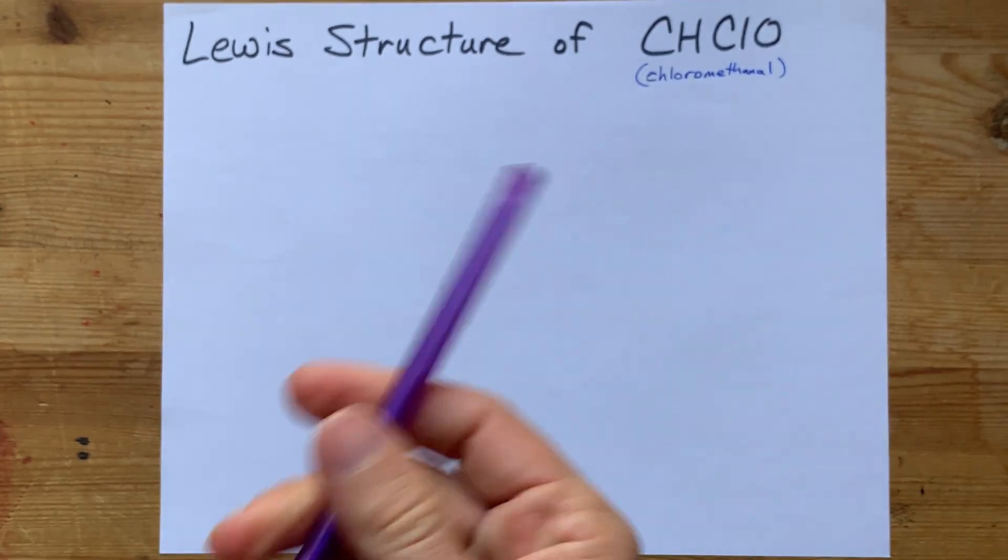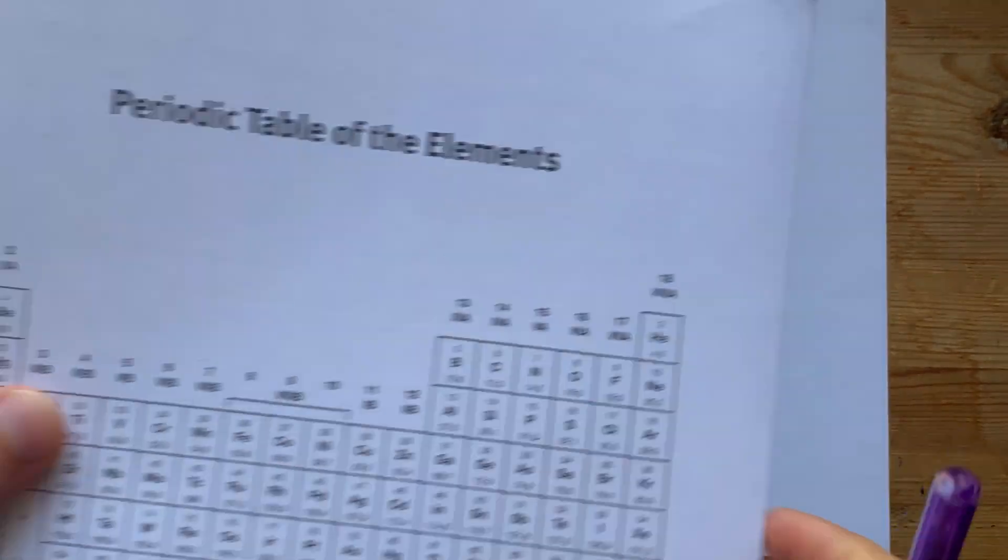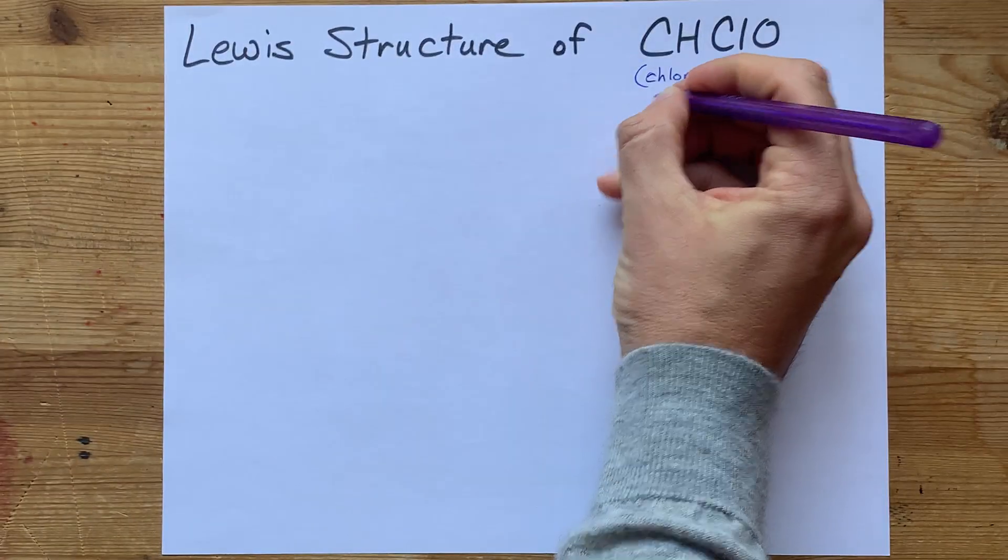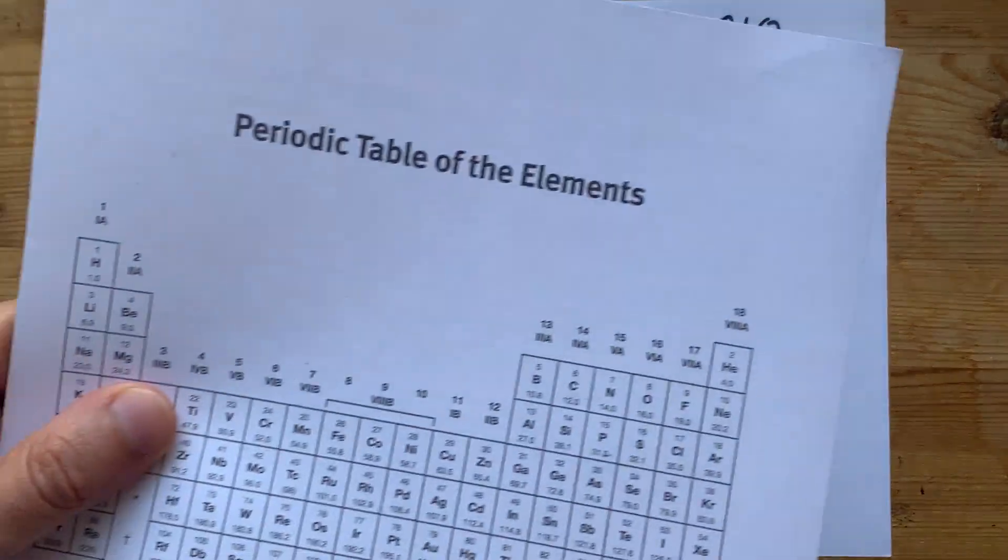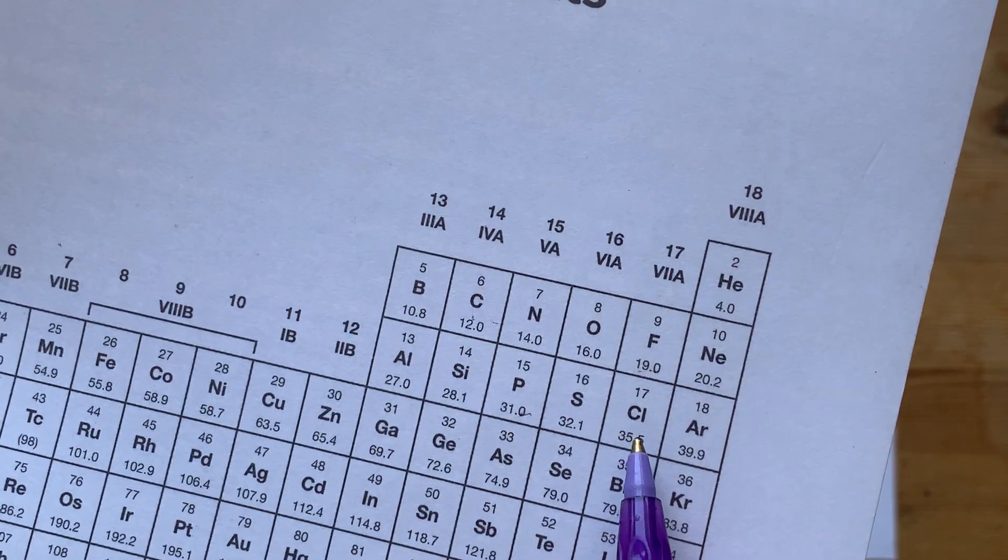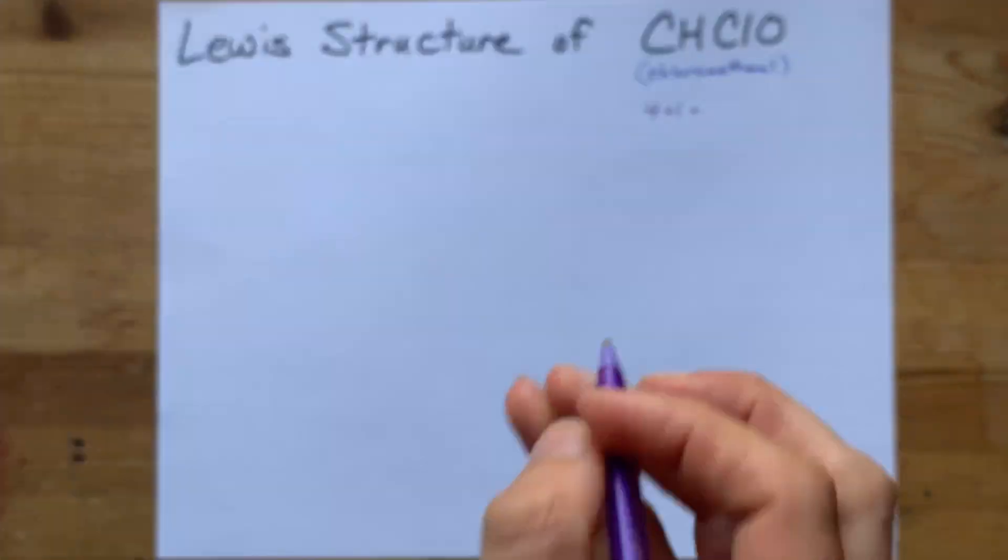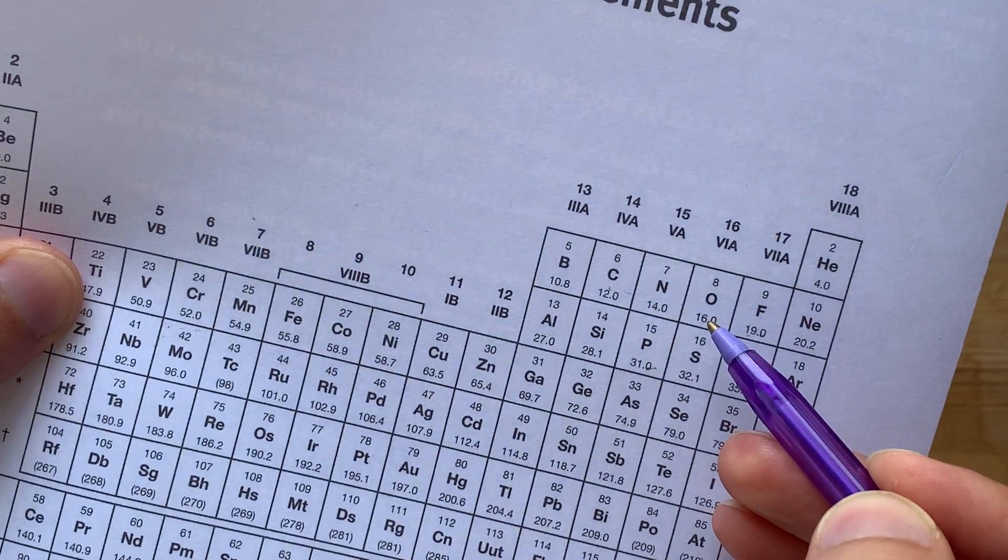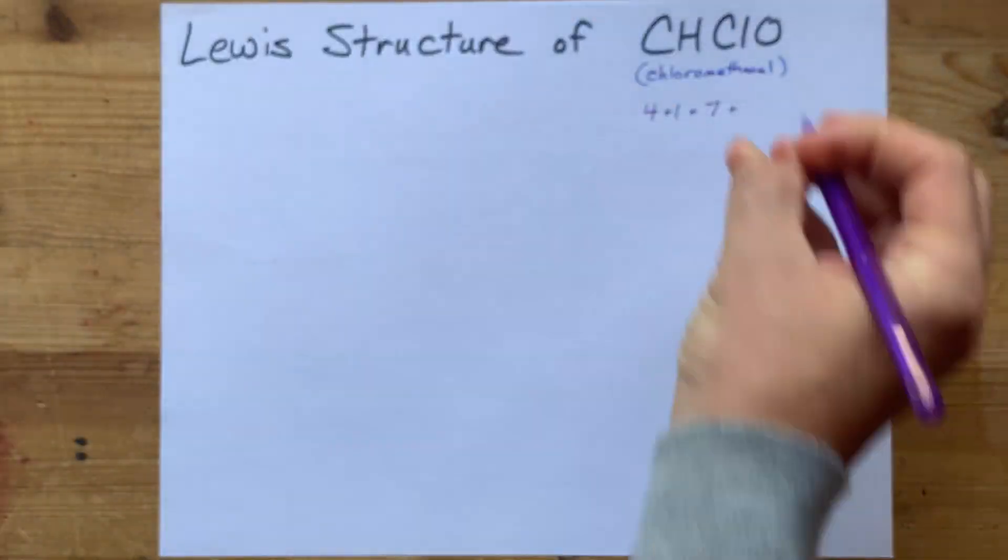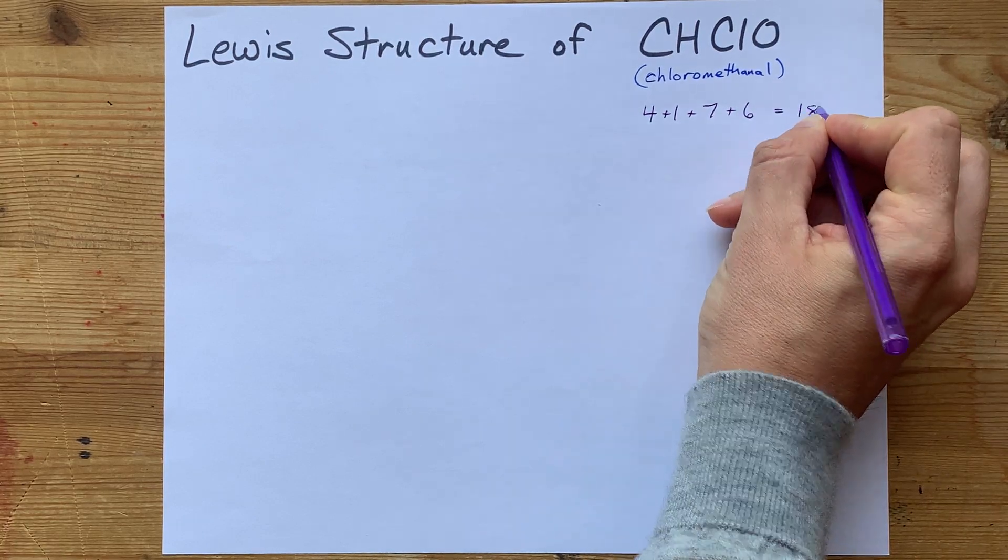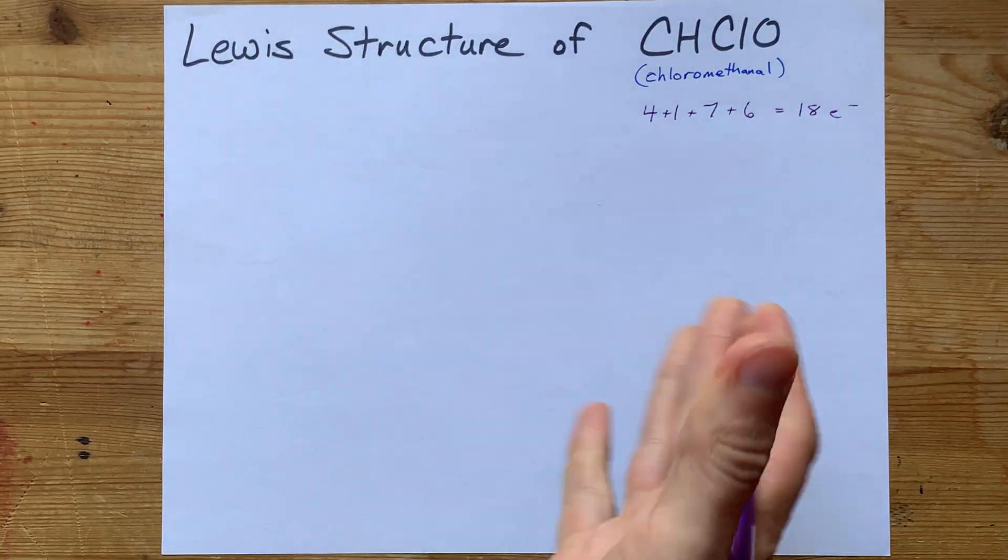Step 1, let's count the number of valence electrons that each of these has. Carbon in group 14 brings 4 valence electrons. Hydrogen in group 1 brings 1 valence electron. Chlorine in group 17 brings 7 valence electrons. And oxygen in group 16 brings 6 valence electrons. Add those together, we need 18 electrons total.